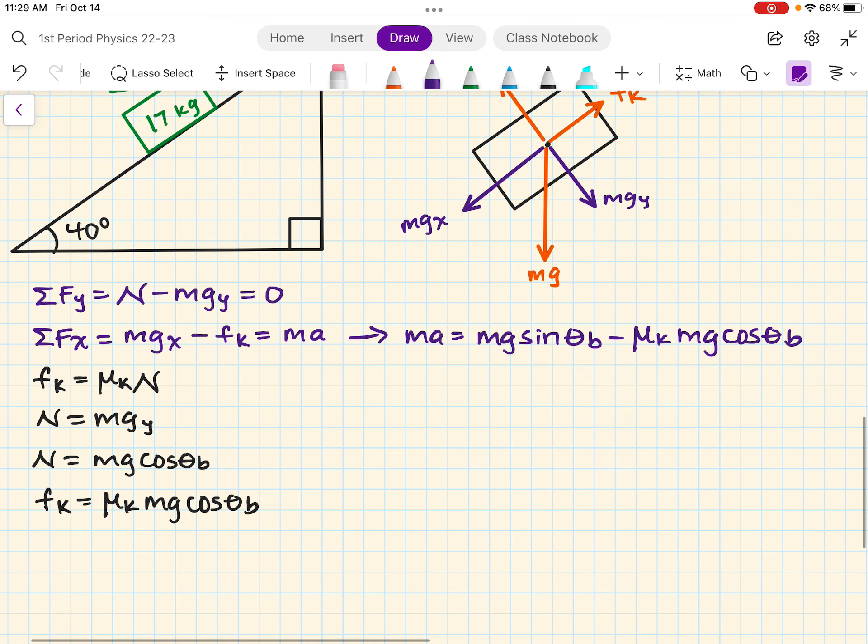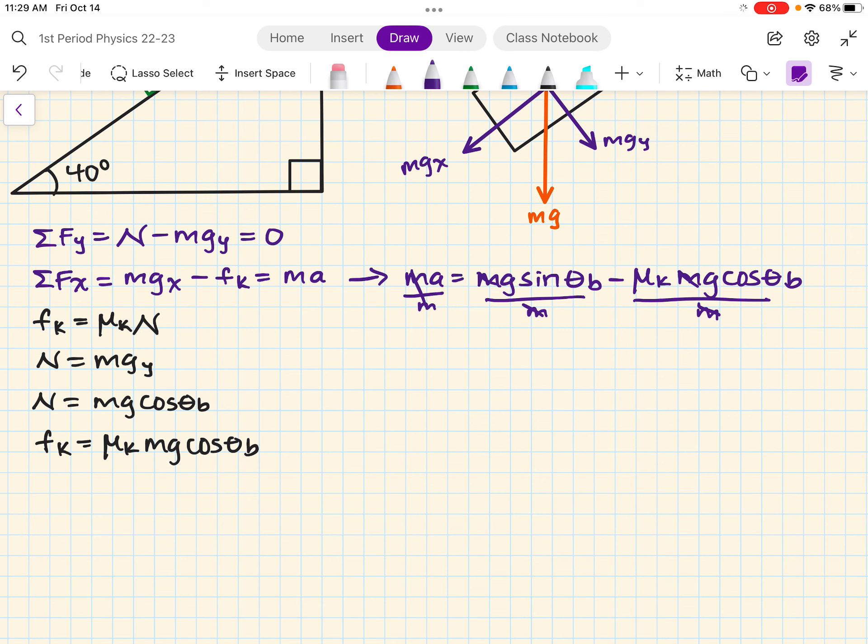All right, so let's solve for acceleration. Super simple. m is present in every single expression, so I can get rid of it. If you don't see it right away, we'll just divide by the mass. These two cancel. Same here. Same here. So now we have acceleration is equal to g sine theta b minus mu k g cosine theta b.